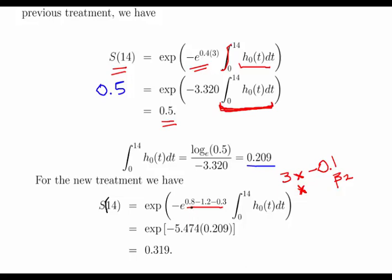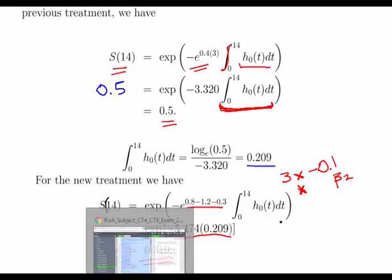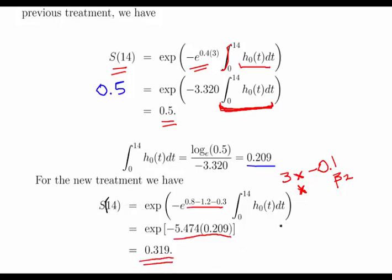Working that out gives minus 0.7. This turns into a bit of calculator work. And so for the new treatment, the survival function is 0.319.